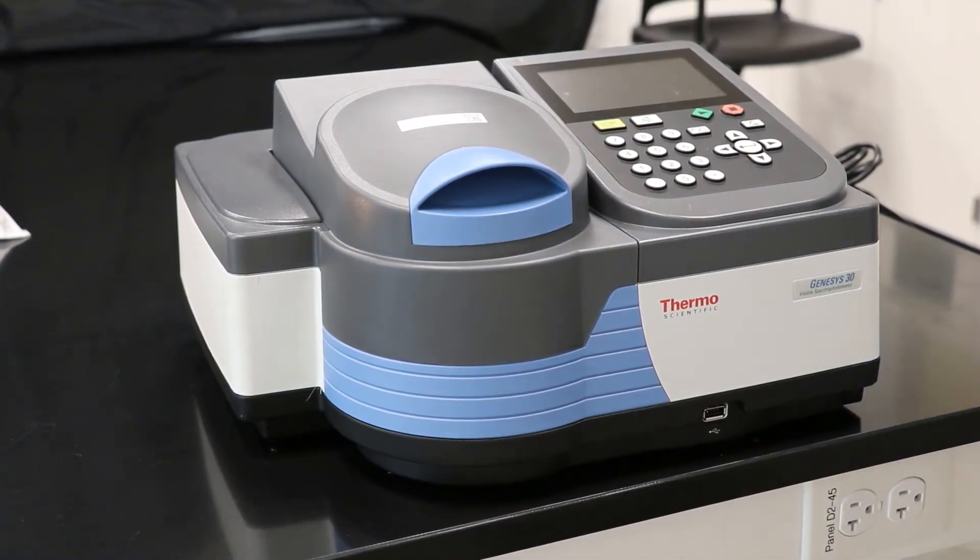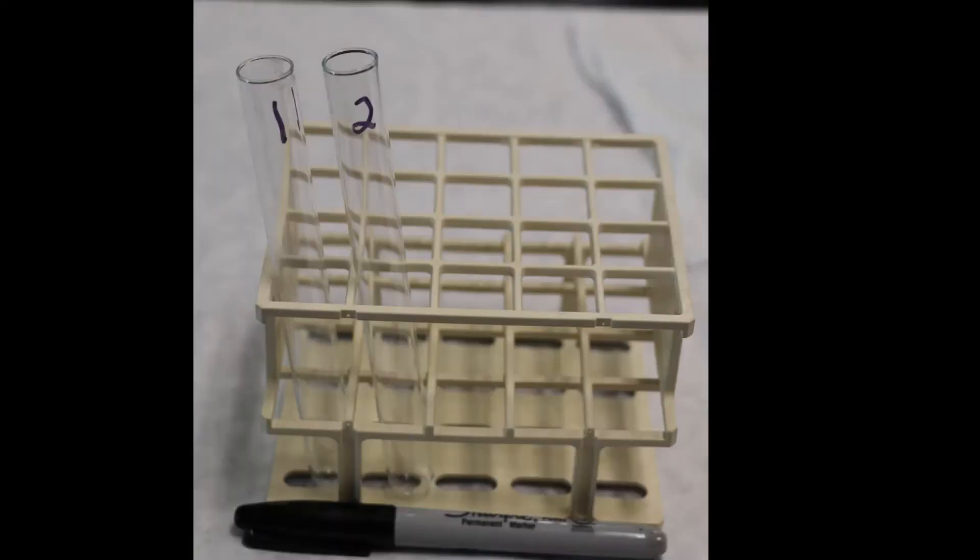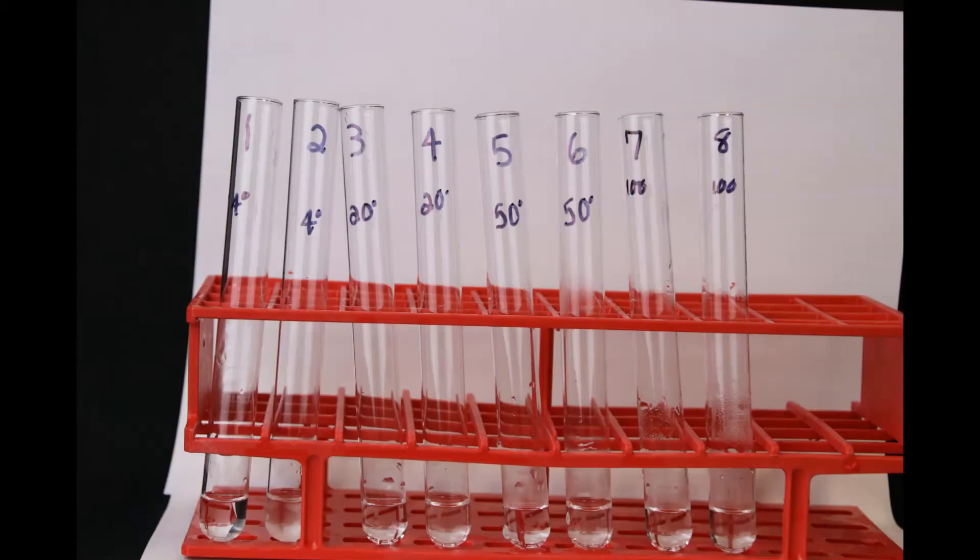Now we're going to see how temperature affects invertase enzyme activity. Obtain a test tube rack, two test tubes, and label them 1 and 2. In this video we will be doing all the temperature groups, so we will label the tubes 1 through 8 to prevent confusion. But when you are in the lab you will probably be divided into groups to perform your assigned temperature.